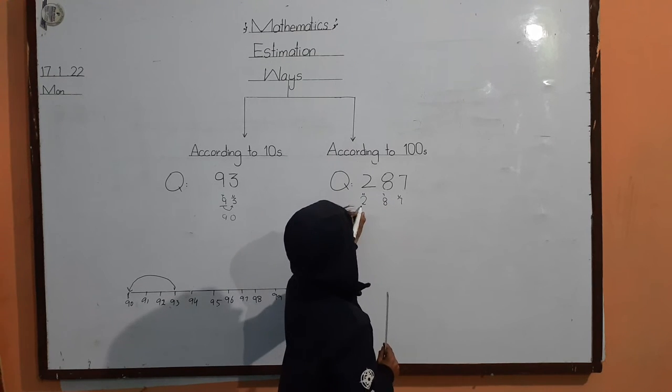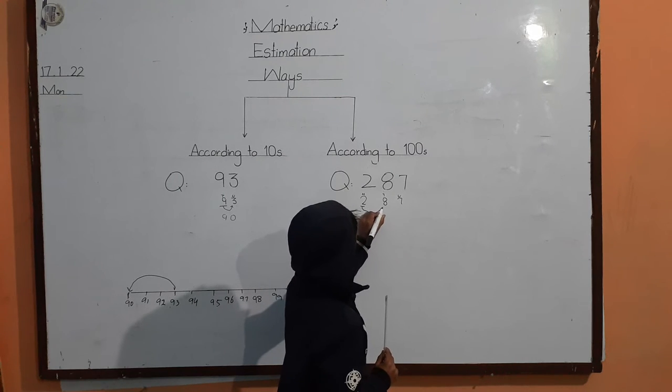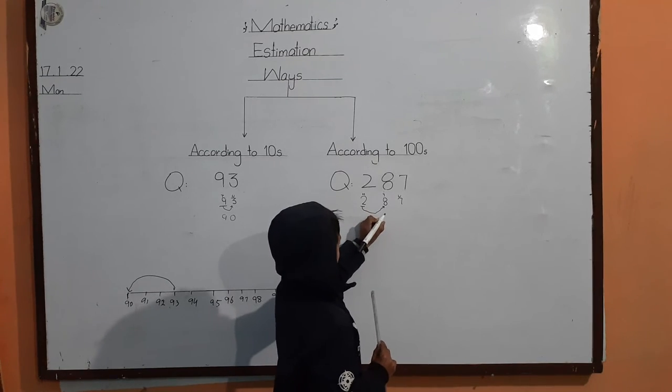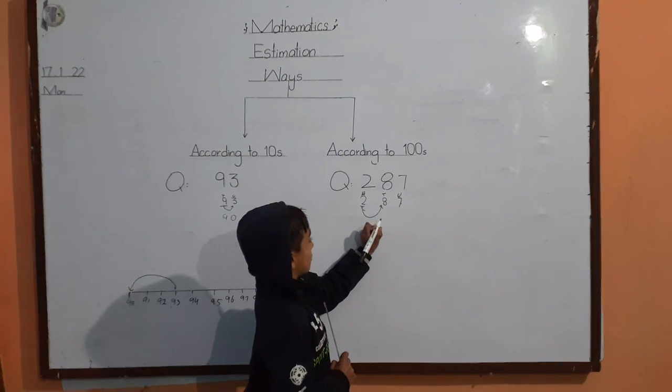Third step, underline karna. Fourth step, arrow lagana. Fifth step, greater than five step.